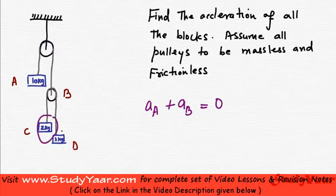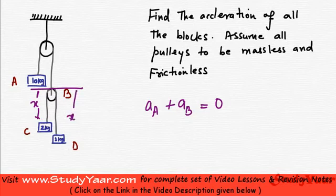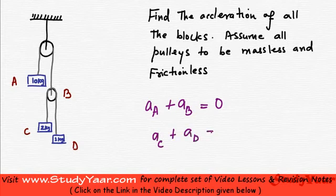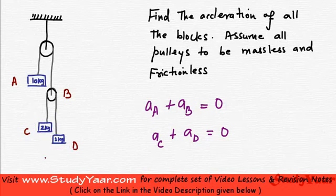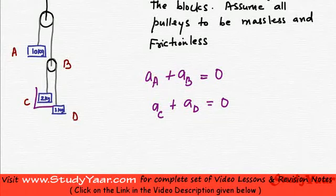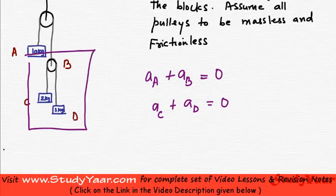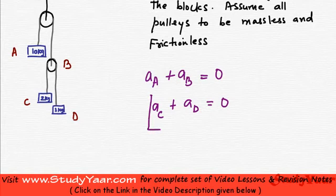Similarly, looking at these two blocks, the whole rope length here is constant. If you take this as a reference, this distance plus this distance is constant. Therefore, you get AC plus AD equals zero. But this acceleration is with respect to the acceleration of the whole subsystem. So AC plus AD is not equal to zero. Rather, AC with respect to B plus AD with respect to B equals zero.